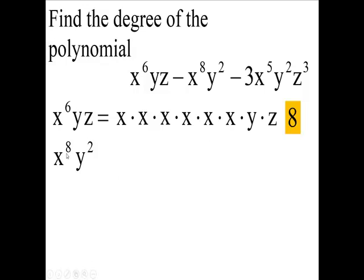The second term has eight X's and two Y's. So let's count them. One, two, three, four, five, six, seven, eight. That finishes the X's. Then nine, ten. So eight plus two is ten.